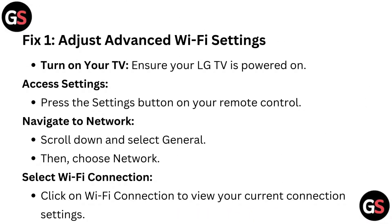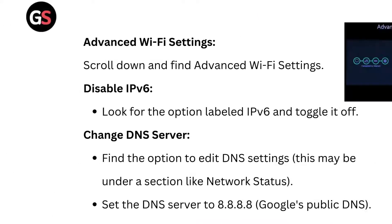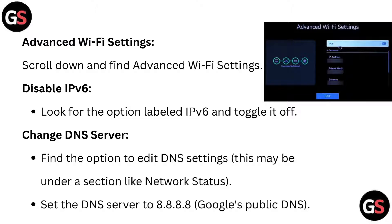Fix 1: Adjust advanced Wi-Fi settings. Turn on your LG TV and press the settings button on your remote control. Navigate to General, then choose Network. Click on Wi-Fi connection to view your current connection settings. Scroll down and find Advanced Wi-Fi settings. Look for the option labeled IPv6 and toggle it off. Then find the option to edit DNS settings — this may be under a section like Network Status — and set the DNS server to 8.8.8.8, Google's public DNS.